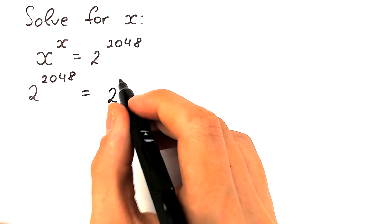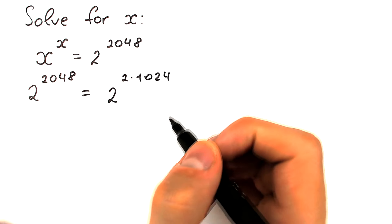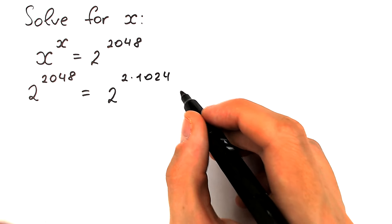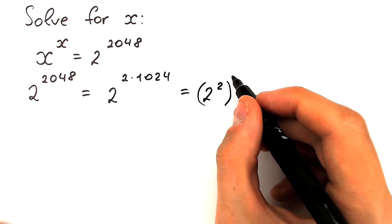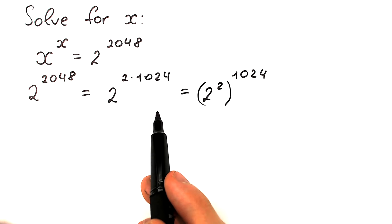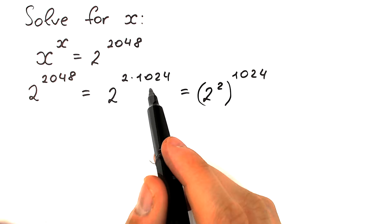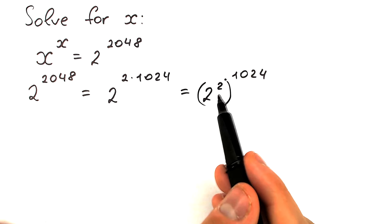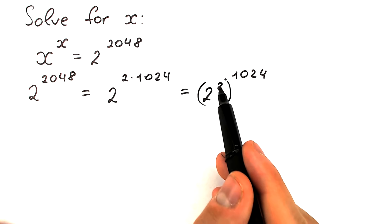So we have 2 to the power 2 times 1024. Using the power rule, we can write this as 2 squared, in parentheses, raised to the power 1024. This is a really important moment. If you know the power rule, you can easily go from 2 squared to the power 1024 back to 2 to the power 2 times 1024 — they are absolutely the same.